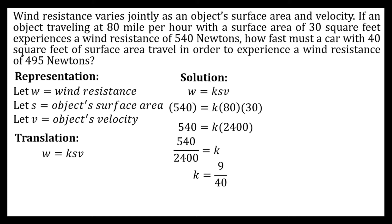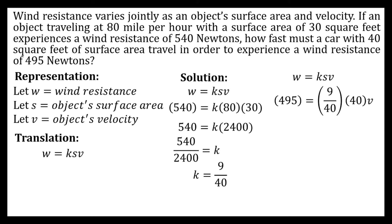Now using the constant of variation, we can find the speed of the car with 40 square feet of surface area experiencing a wind resistance of 495 newtons, using the same formula but substituting the new values. Solving for velocity: 495 is equal to the constant of variation, which is 9 over 40, times 40 times V.